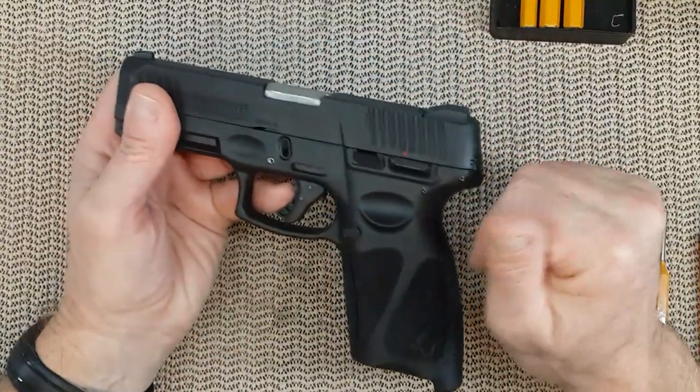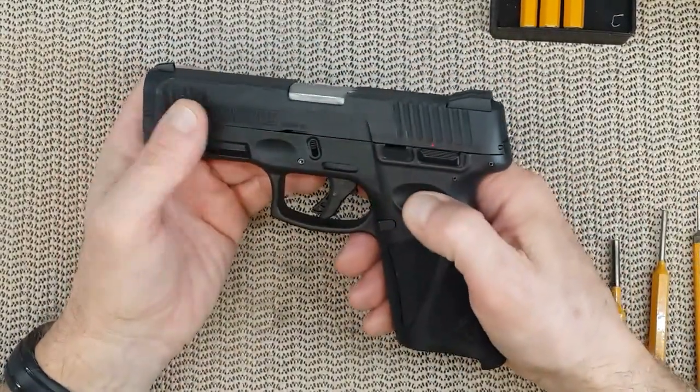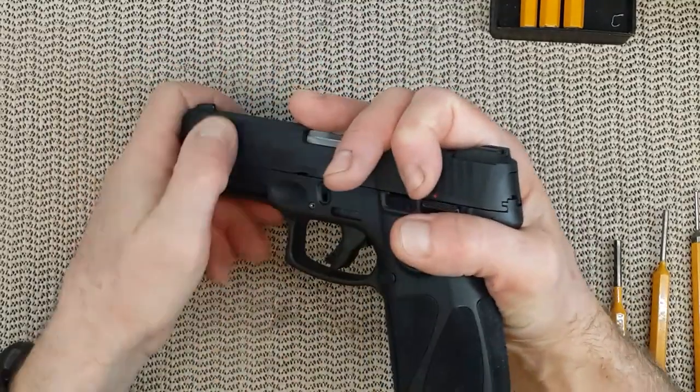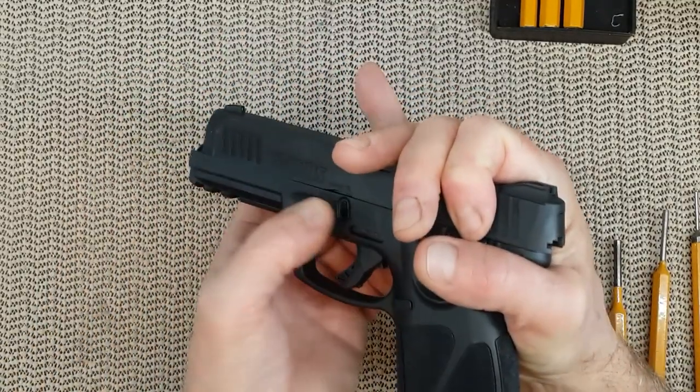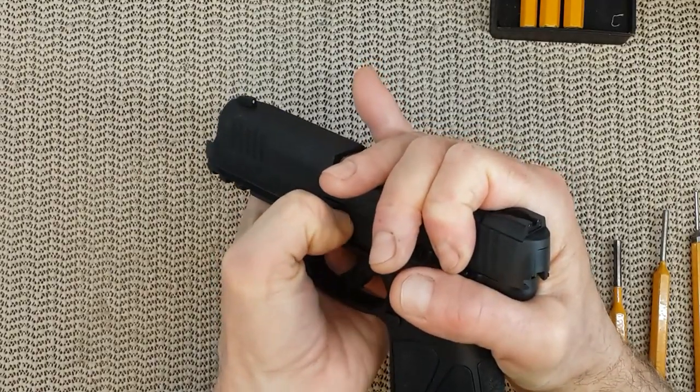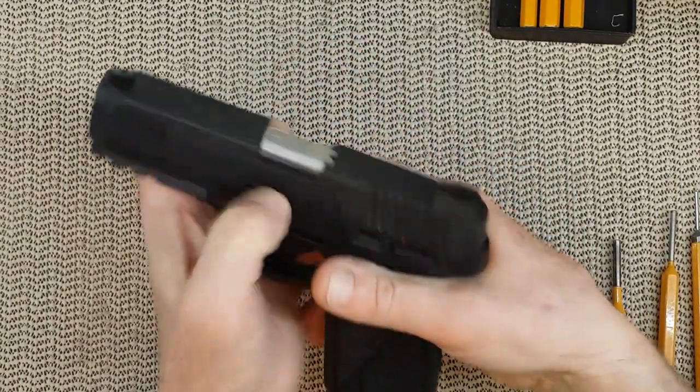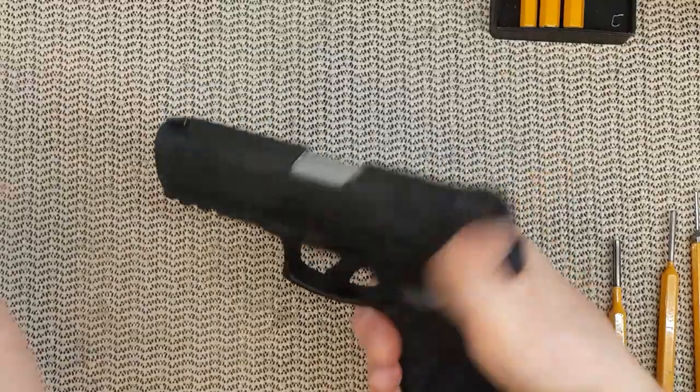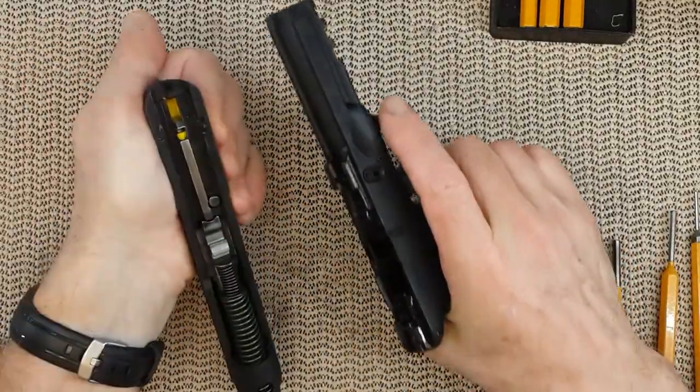As always, we need to remove the slide from the lower frame. For this, you pull the slide slightly toward the back and, like a Glock, pull this little tab down and let go of the slide. At that point, you can either fire the gun or just pull out the slide.